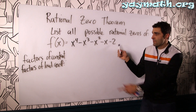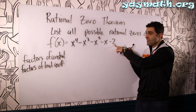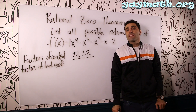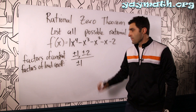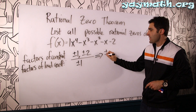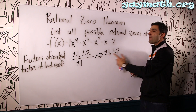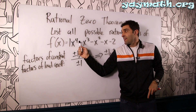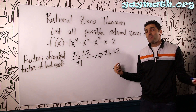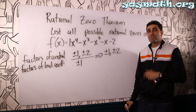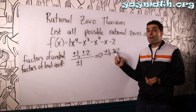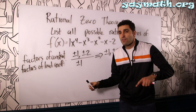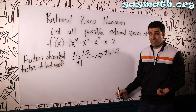Let's try to solve this polynomial without the aid of a calculator using the Rational Zero Theorem to guide us. Let's find the potential solutions by taking the factors of the constant — plus or minus one and plus or minus two — and dividing by all the factors of the leading coefficient. Thankfully, here it's only plus or minus one. So every combination is basically plus or minus one, plus or minus two. These four numbers are the potential rational solutions.